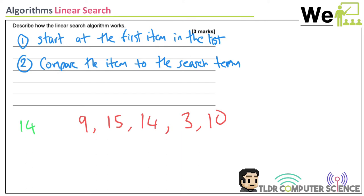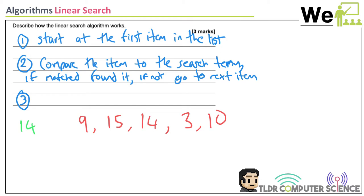If not matched, go to the next item and repeat. The third point is to repeat until either found, or if we get to the end of the array and haven't found it, it means it's not there.